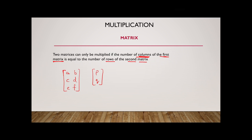If the order of the first matrix is three by two, and the order of the second matrix is two by one — meaning it has two rows and one column — we can see that the number of columns of the first matrix, two, is equal to the number of rows of the second matrix. So it is possible to multiply these two matrices.